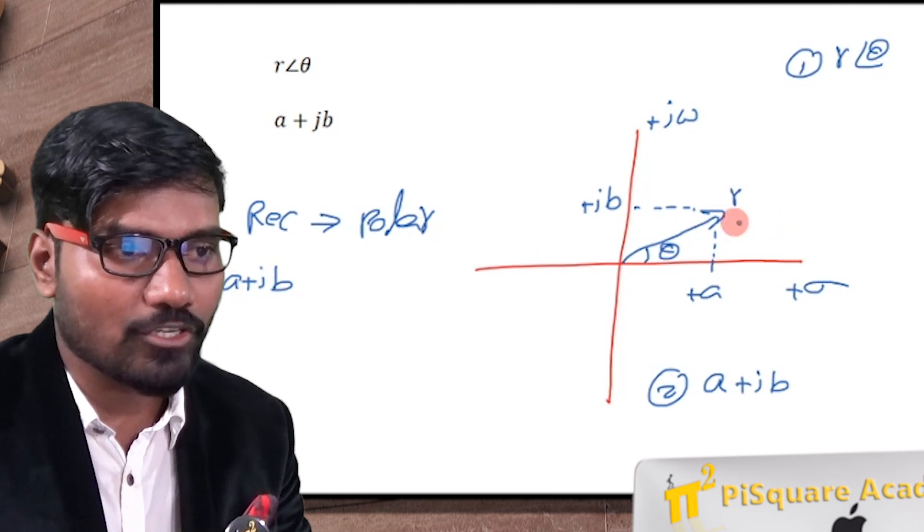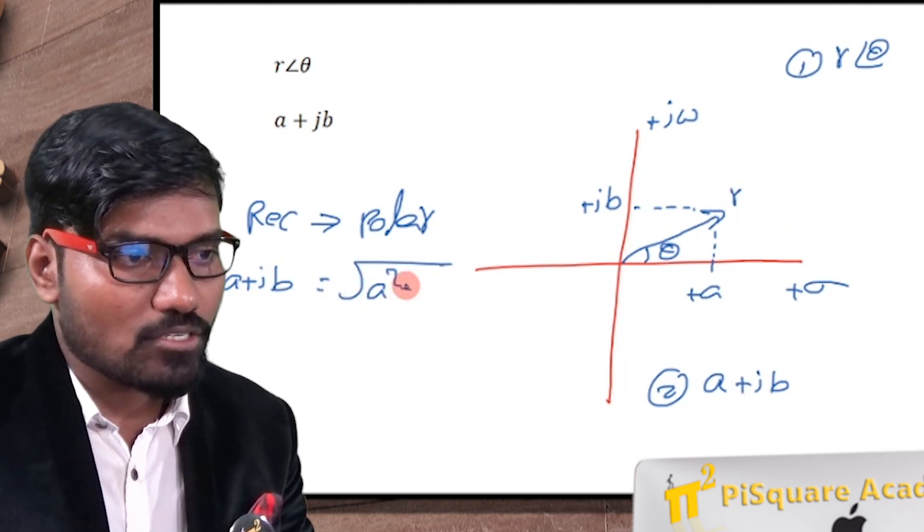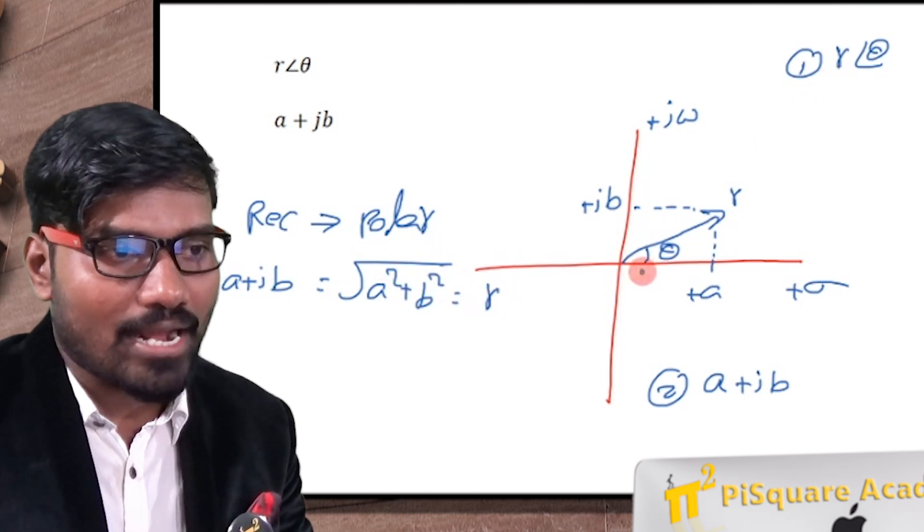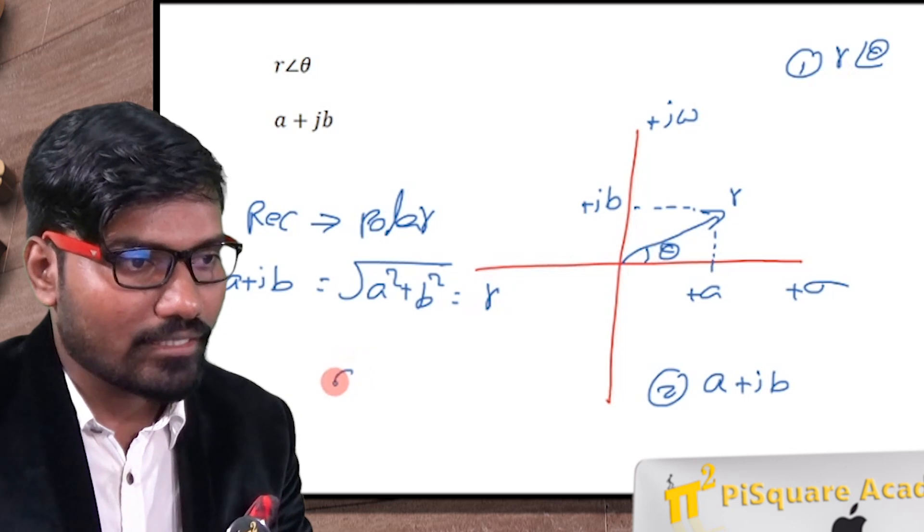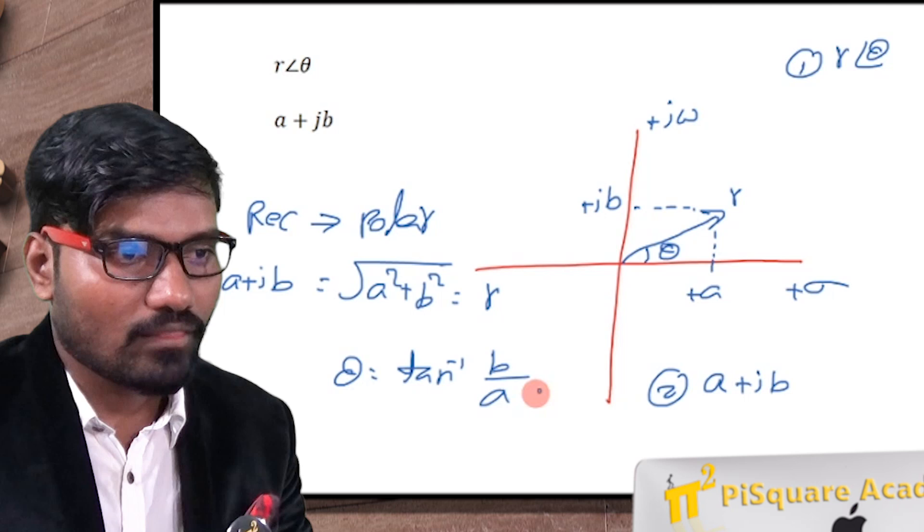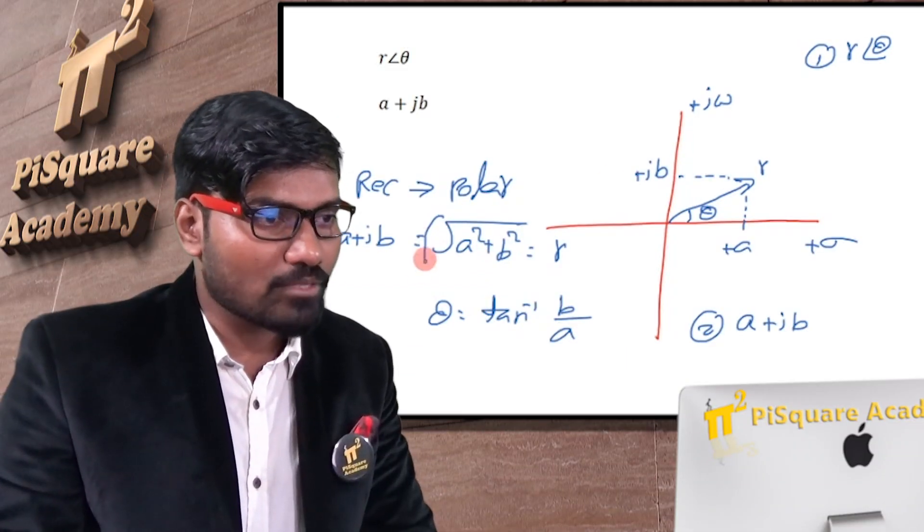How to find the magnitude of it? Simply, square root of a square plus b square will be the r magnitude. What is the angle? How to find the angle? Angle theta is equal to tan inverse of b by a, that is imaginary part by the real part. This is a conversion formula. So keep this formula in your mind.